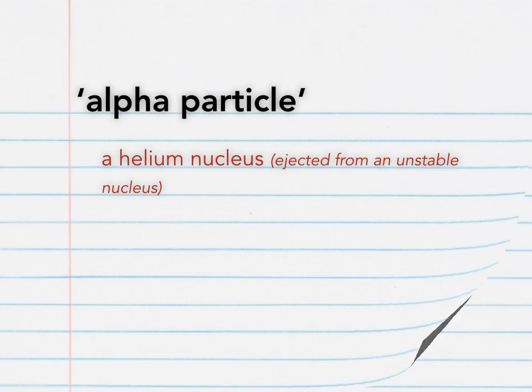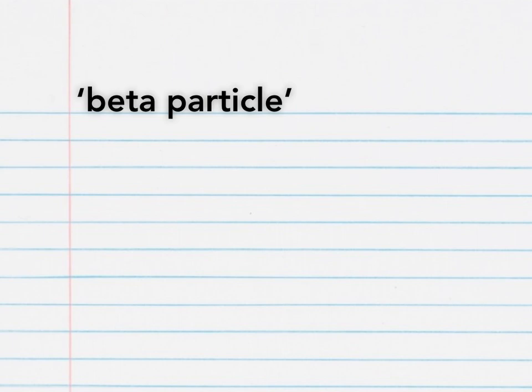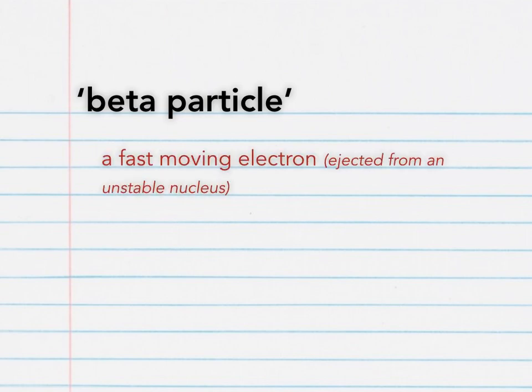Next up, we have the beta particle. Nuclear radiation is emitted from the nucleus of an atom, although you wouldn't expect to find a beta particle there. A beta particle is a fast-moving electron ejected from an unstable nucleus. Beta particles are emitted when a neutron in the nucleus is converted into a proton and an electron. Beta particles are negatively charged, move at around 90% of the speed of light, and are moderately ionising.